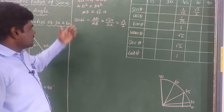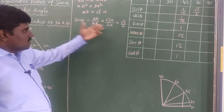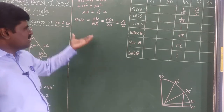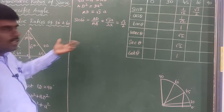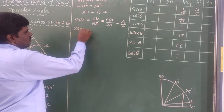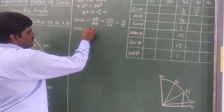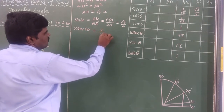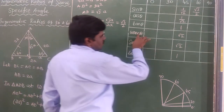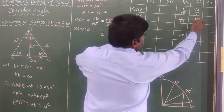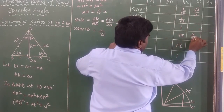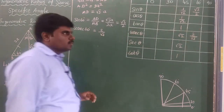Similarly, sin 60° = √3/2 means cosec 60° is the reciprocal of sin 60°. So cosec 60° = 2/√3.